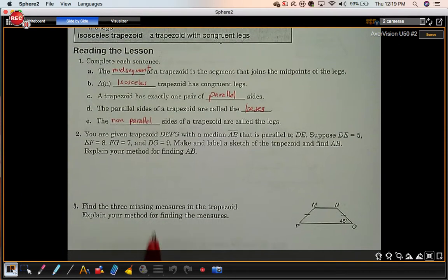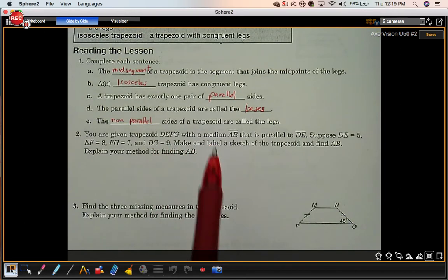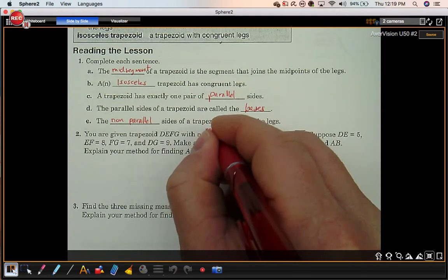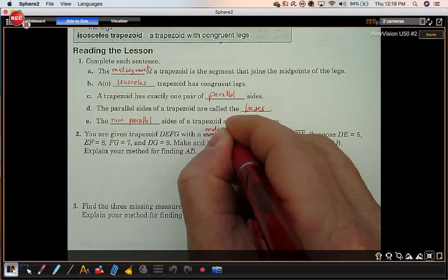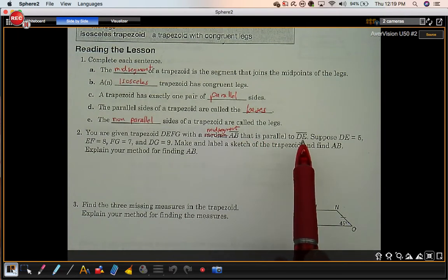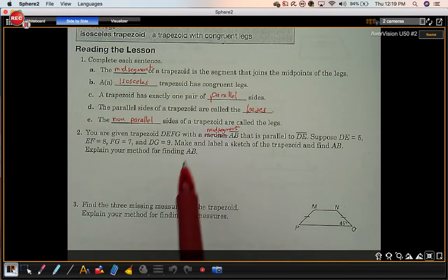Number two: You're given trapezoid DEFG with a median, or midsegment, segment AB that is parallel to segment DE. Then they give you some other lengths. Let's draw this trapezoid.